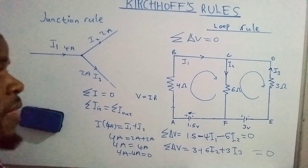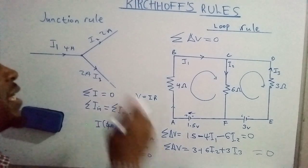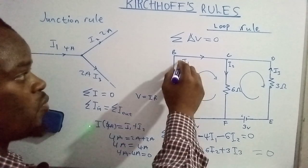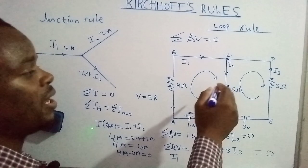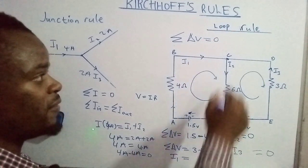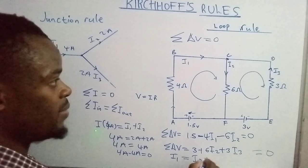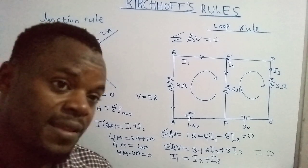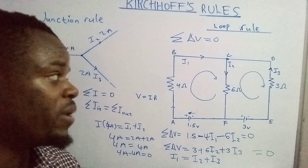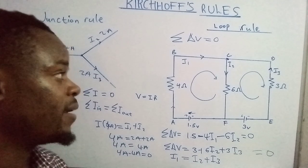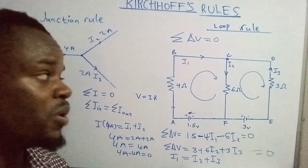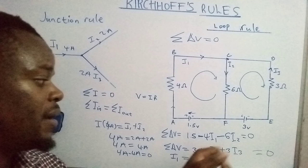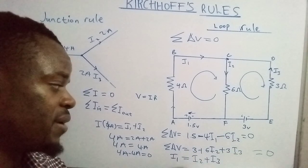The other equation we need is from the junction rule. The main current, current one, reaches the junction and splits into two, giving us: current one equals current two plus current three. So now we have three equations and need to determine the values of current one, current two, and current three.